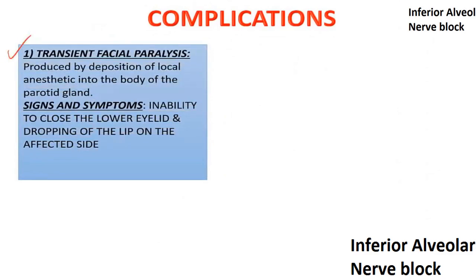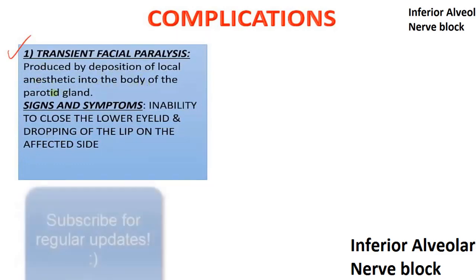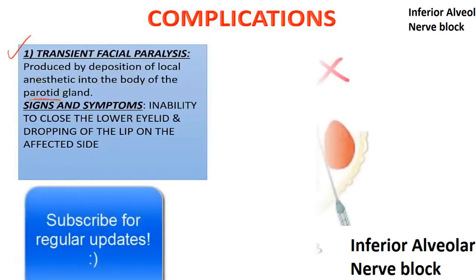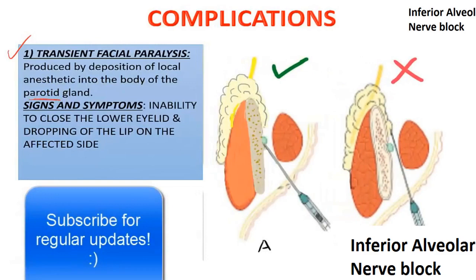The first complication is transient facial paralysis. This is produced by deposition of the local anesthetic into the body of the parotid gland — meaning the needle entered the parotid gland rather than the correct location. This can cause transient facial paralysis as the anesthetic passes through the gland, resulting in inability to close the lower eyelid and drooping of the lip on the affected side.